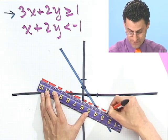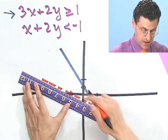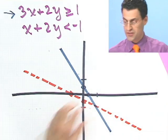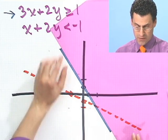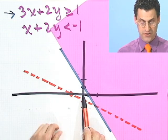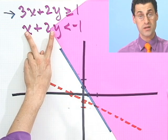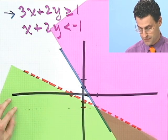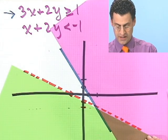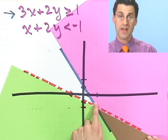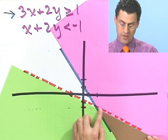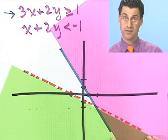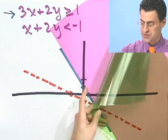No matter where the boundary is, we know we're not including it. Now where do I shade? I pick the origin: is zero less than negative one? No, it's not, so I must want the region below that dotted line. The intersection of the two shaded regions is this little wedge — a triangular region. That's the solution: all points satisfying both inequalities simultaneously. I can include the solid boundary but not the dotted one.